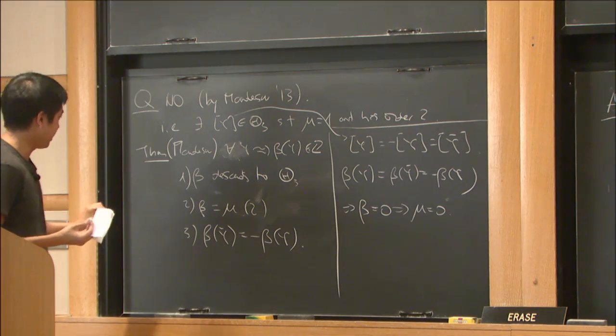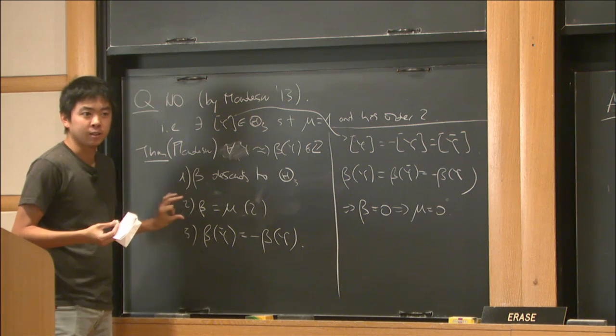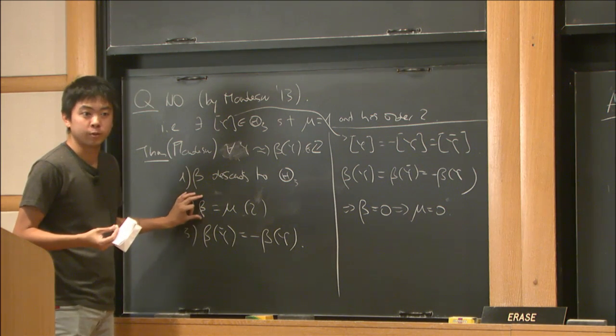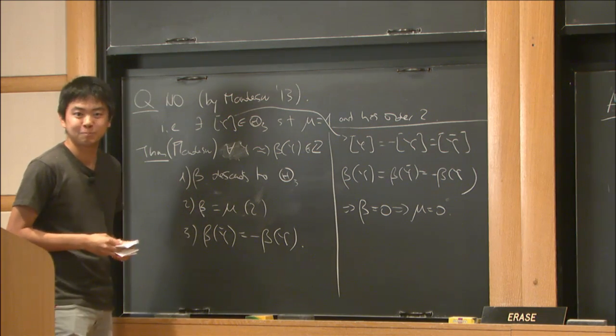Just to finish, where does this β come from? This β comes from studying a Pin(2) equivariant version of Seiberg-Witten Floer homology. And that's what I study and what I plan to study this year here.